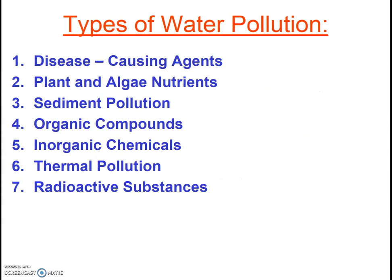For our discussion, I've chosen to divide water pollution into seven different categories. Pause the video and read through these carefully. At the end of this week, you should be able to list the seven types of water pollution. For each type, you should be able to define what it means, give specific examples, identify several important sources and note if they are point sources or non-point sources, identify the negative impacts, and discuss what can be done to decrease this pollution or its impacts.